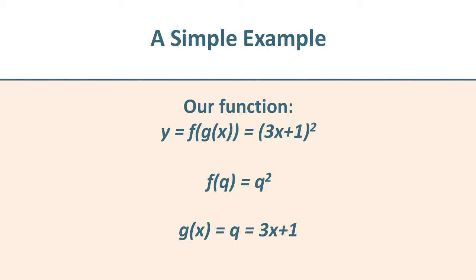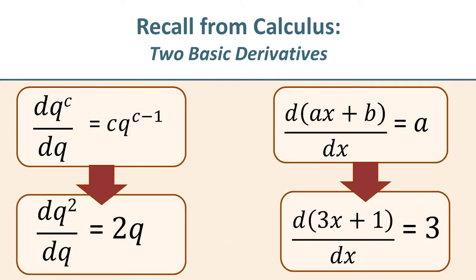Before we put these two derivatives together, let's just recall basic calculus and work them out very quick. We recall that if we're taking the derivative of something that is to a power with respect to that thing, like d of q to a power c with respect to q, then it's going to be that power, in our case c, times that thing that we're taking the derivative of, that is now to the power of c minus 1. So if we have d of q squared with respect to q, our derivative is 2q.